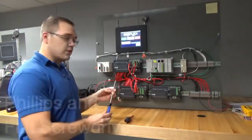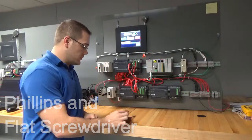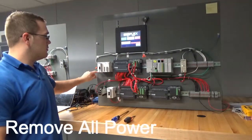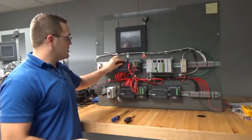Some tools we'll need are just a Phillips screwdriver and a flat screwdriver. We're going to start by removing all power. Once the power is removed, we're going to fold these covers open.